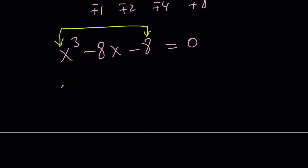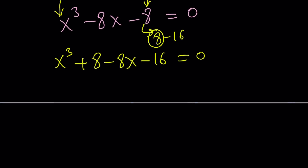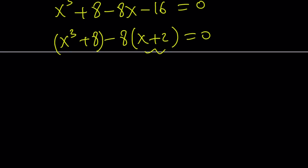So here's what I'm going to do. I can't get the difference of two cubes, but can I get the sum of two cubes? And the answer is yes. Because x³ + 8 is a sum of two cubes. Where does the 8 come from? I wrote the negative 8 as 8 - 16, and I used the 8. Now I've got to use the negative 16. I kind of thought about this, of course. So now we have these two things.